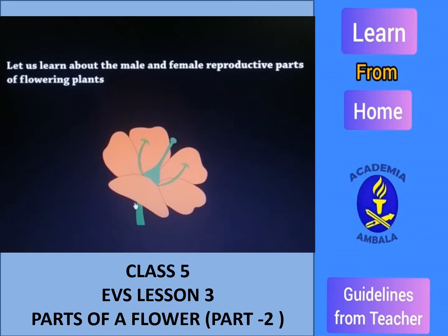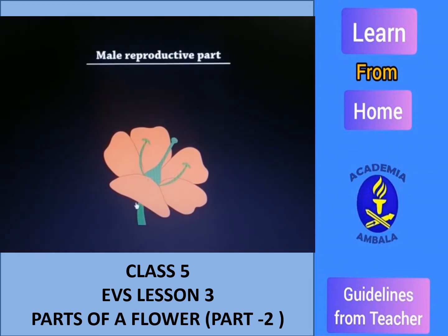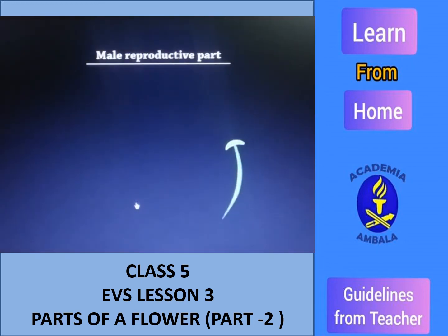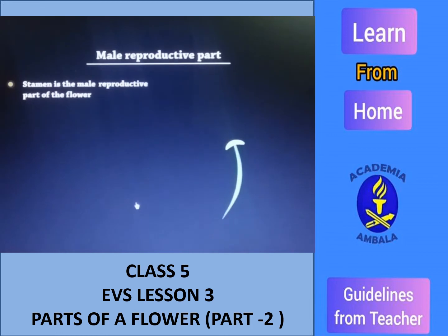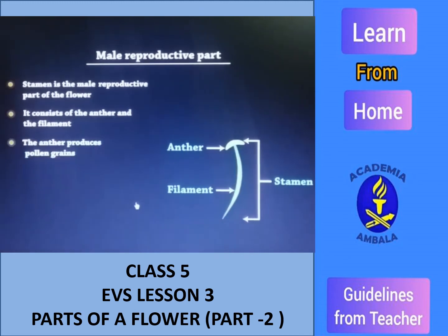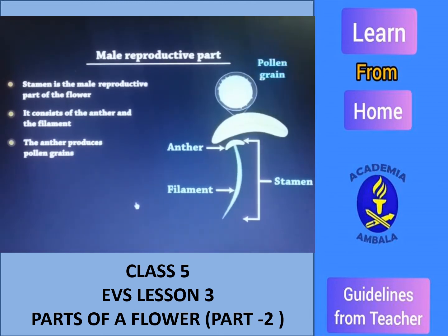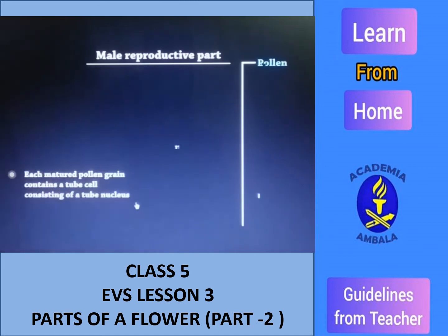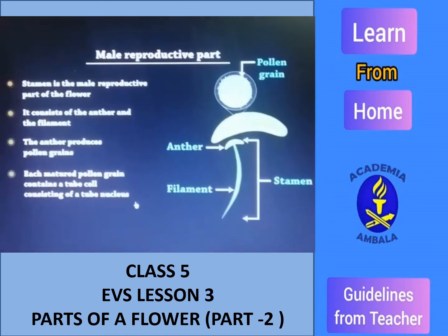Let us learn about the male and female reproductive parts of flowering plants. Stamen is the male reproductive part of the flower. It consists of anther and filament. The top part is called anther and the tube-like structure is called filament. The anther produces pollen grains. Each pollen grain contains a tube cell consisting of a tube nucleus.